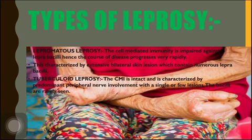The next type is tuberculoid leprosy. In this type, cell-mediated immunity (CMI) is intact and it is characterized by predominant peripheral nerve involvement with single or few leprosy bacilli. The leprosy bacilli are rarely seen in tuberculoid leprosy.